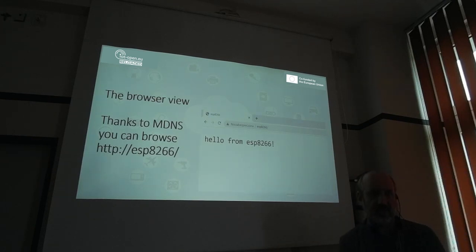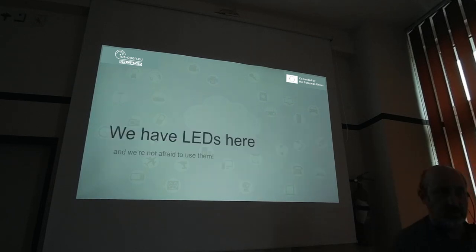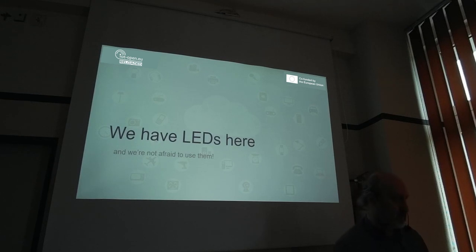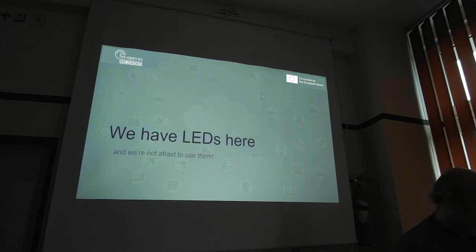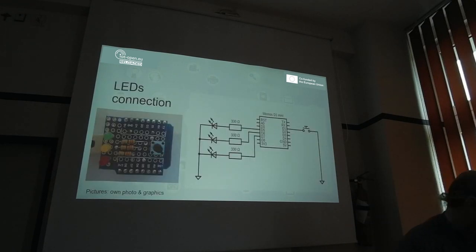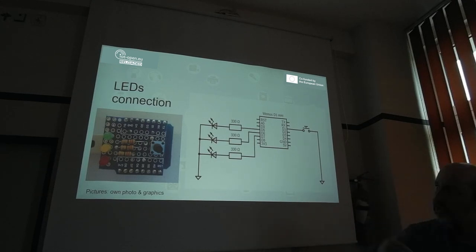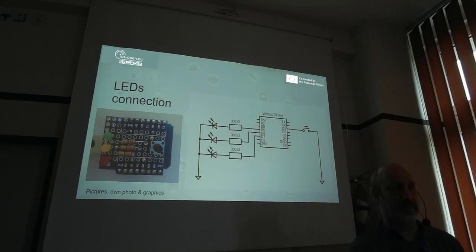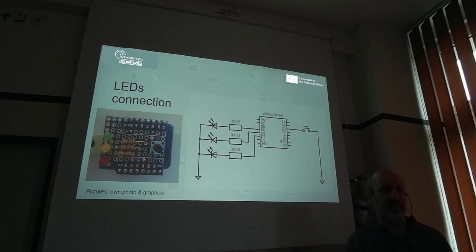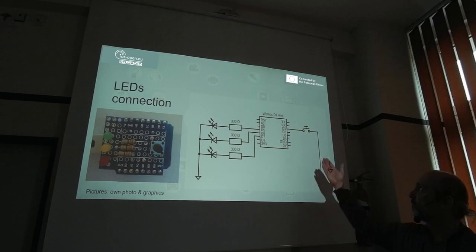But this works like a web server, not like an IoT node. So we need to provide some IoT functionality. The simplest IoT functionality can be controlling LEDs. Here is the schematic diagram of the shield we have built: three LEDs with current-limiting resistors connected to our Wemos D1 mini, and one button. We have three LEDs with different colors and one push button.